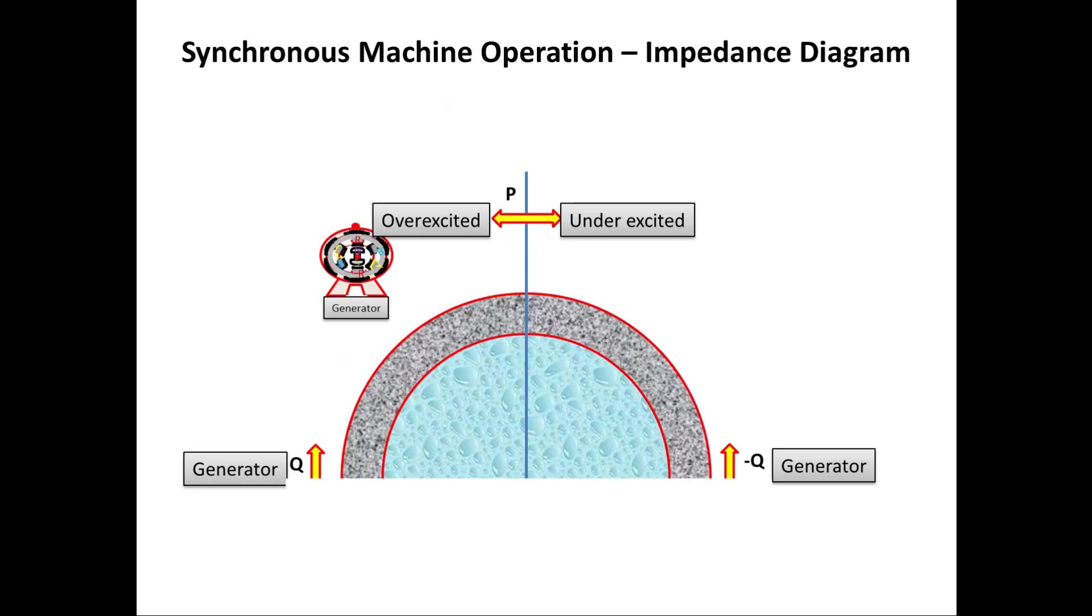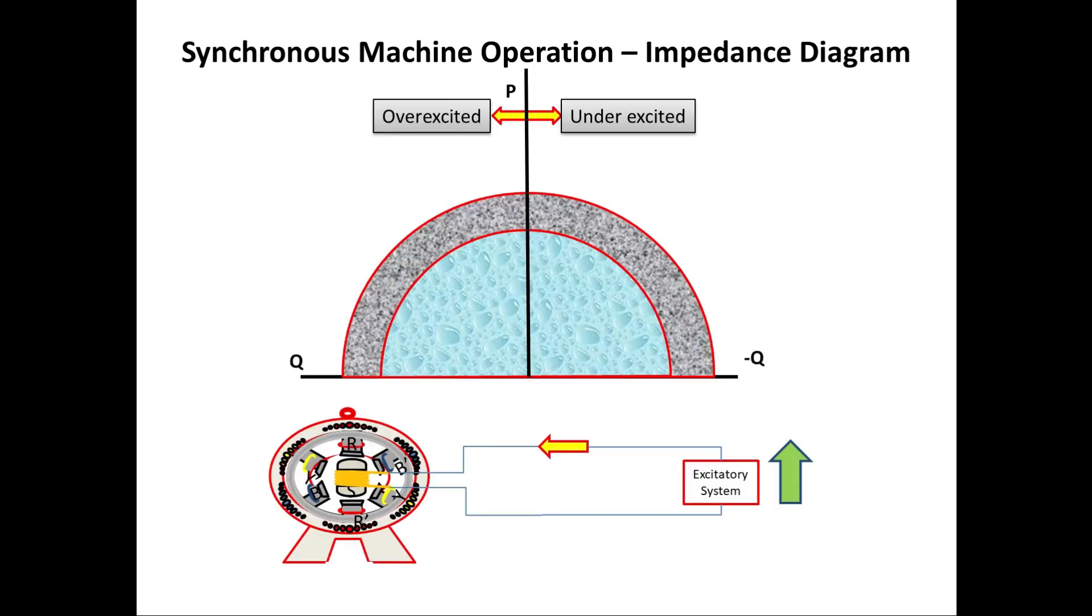Now we are going to see from this area, which is the safest place to operate the generator. That means the generator can operate all over this curve. But in certain place, if we see, operating the generator will be dangerous and it will get damage. So we are going to eliminate the unsafe area from this curve.